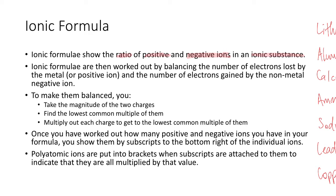The ionic formula is worked out by balancing the numbers of electrons lost by the metal and the number of electrons gained by the non-metal, which is the negative ion. That's how we work out the formula — by balancing the number of electrons lost and gained to get the right ratio of atoms. To make them balanced, first you take the magnitude of the two charges, find the lowest common multiple of those two charges, and then multiply out each charge to get that lowest common multiple.